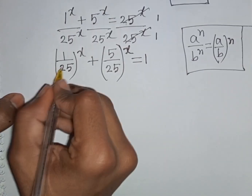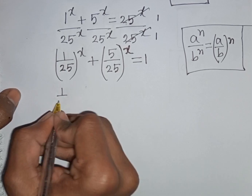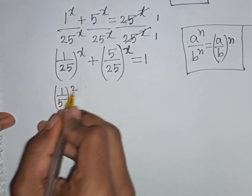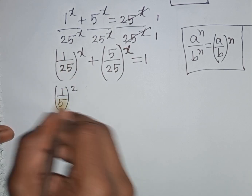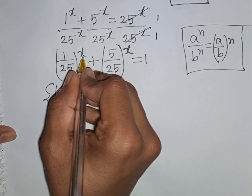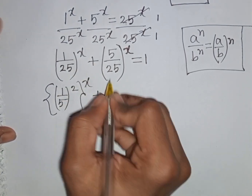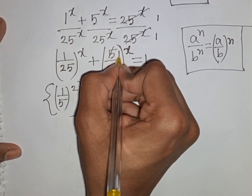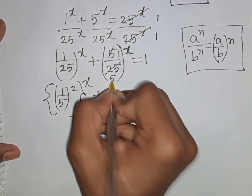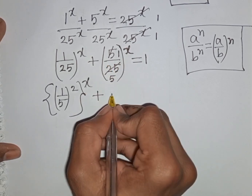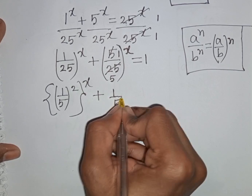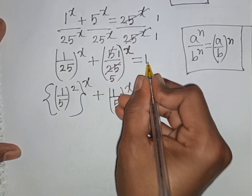Now, 1/25 can be written as (1/5) squared, since 5 squared equals 25. And 5/25 simplifies to 1/5. So we have (1/5)^(2x) plus (1/5)^x equals 1.